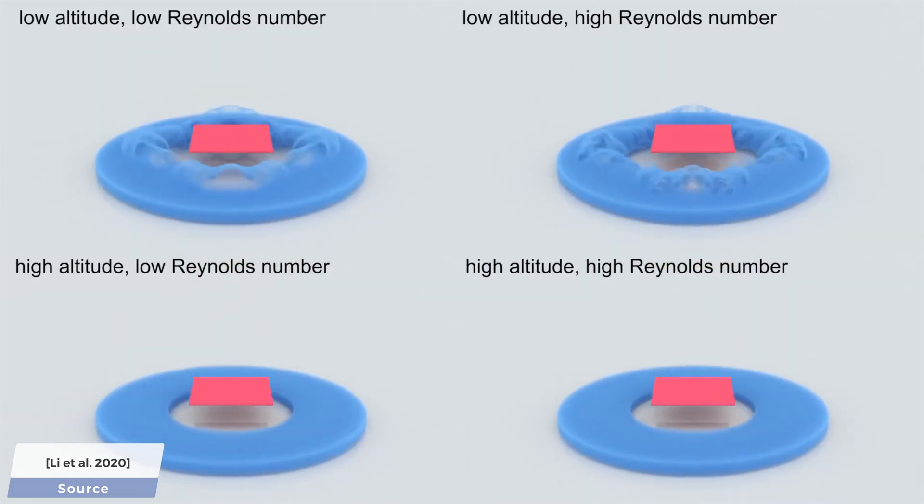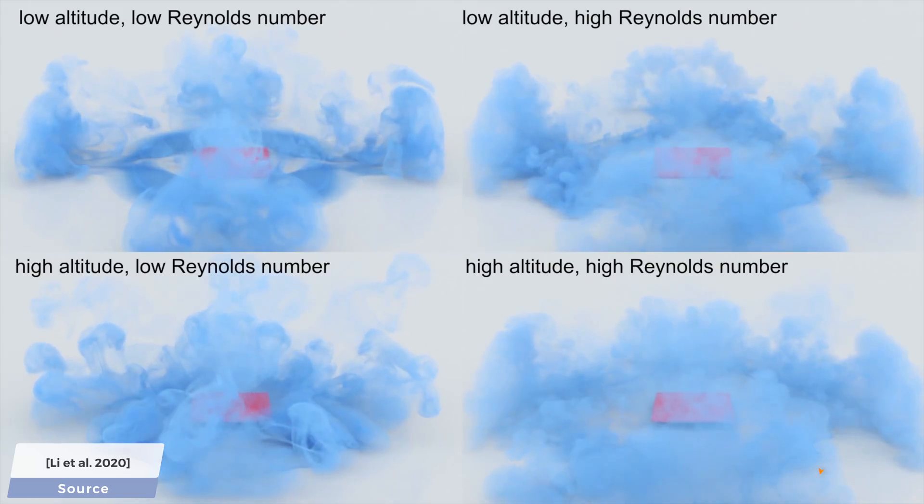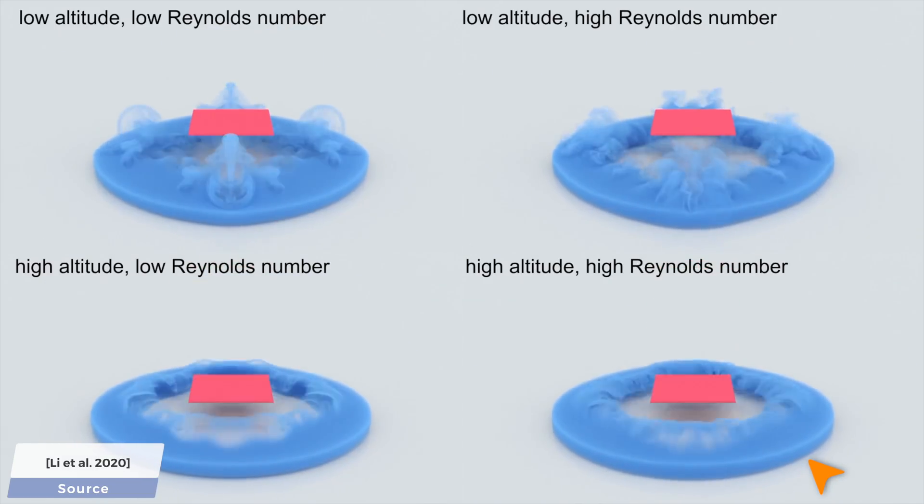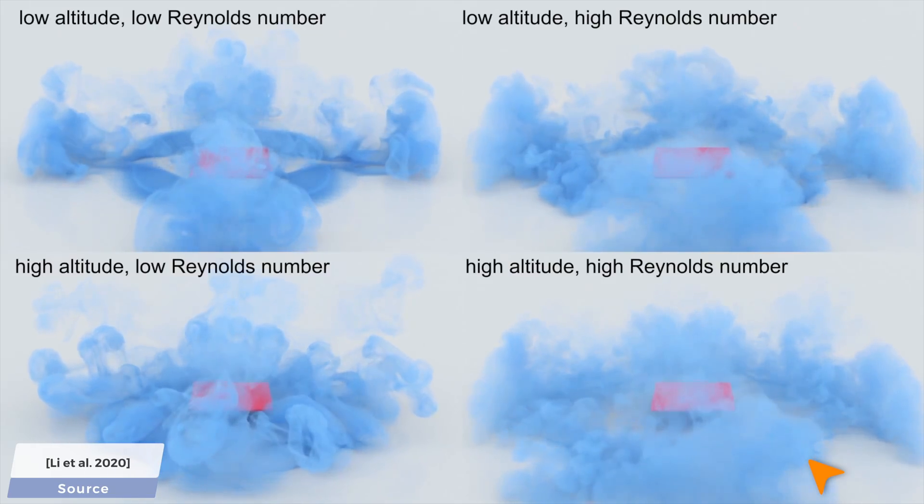This example also showcases one-way coupling, where the falling plate stirs up the smoke around it. The parts with the higher Reynolds numbers showcase more turbulent flows. Typically, that's the real good stuff if you ask me.